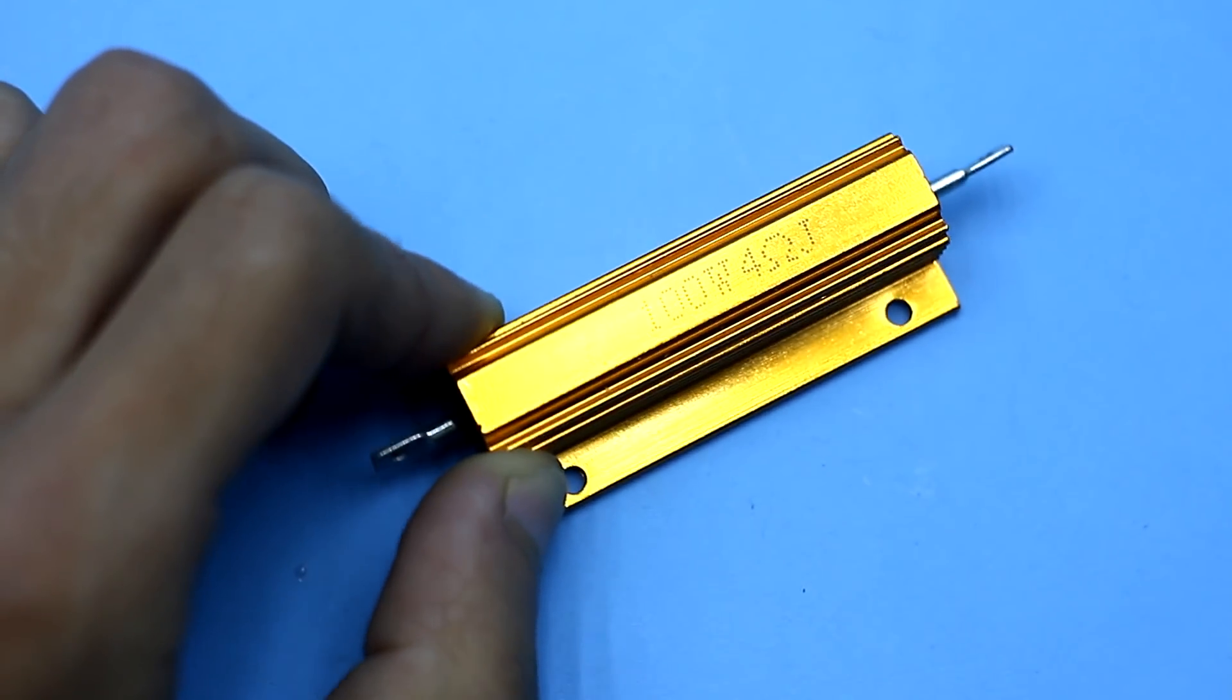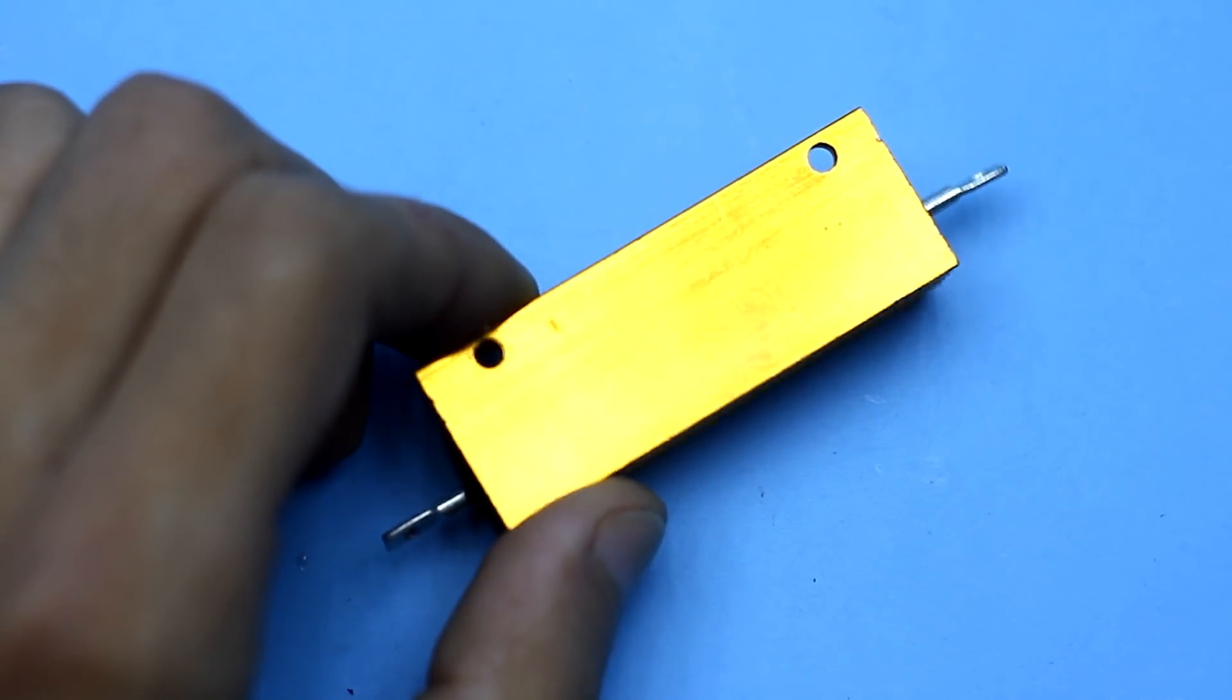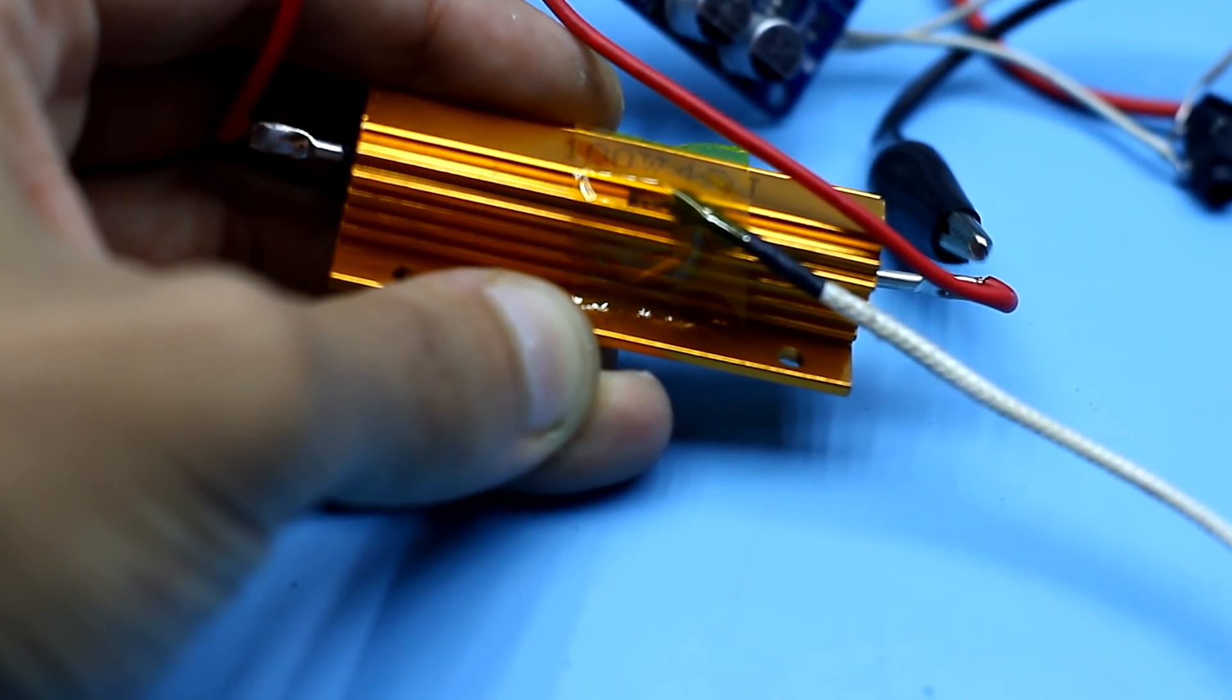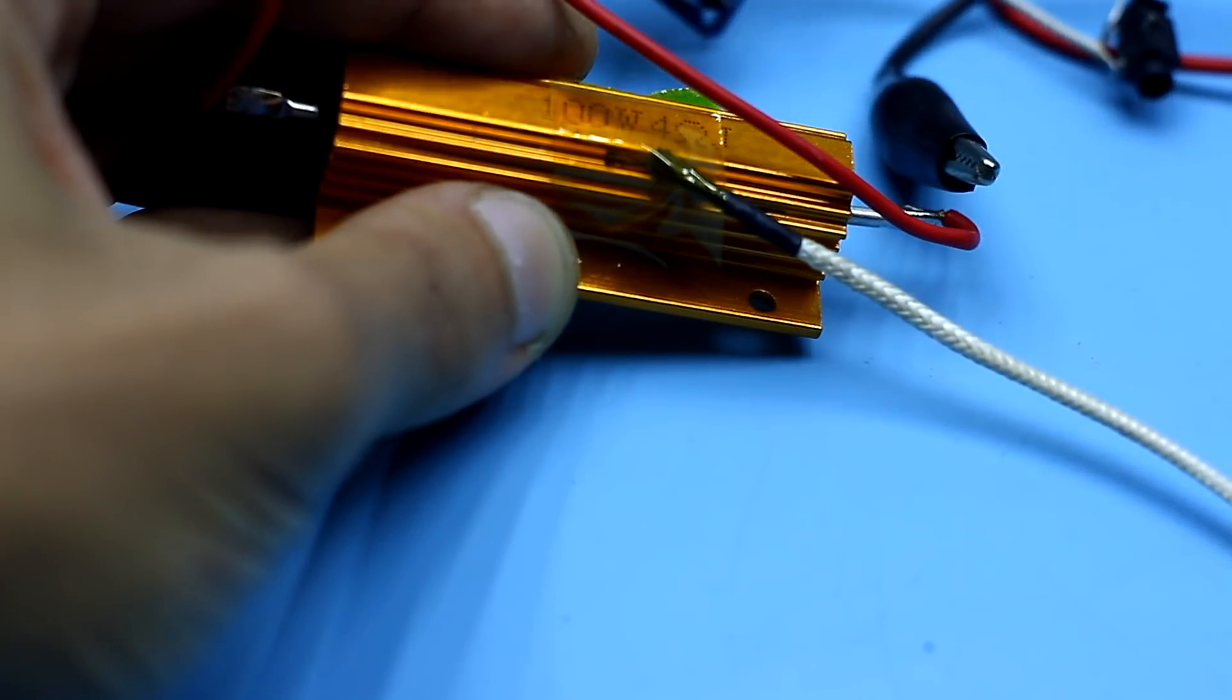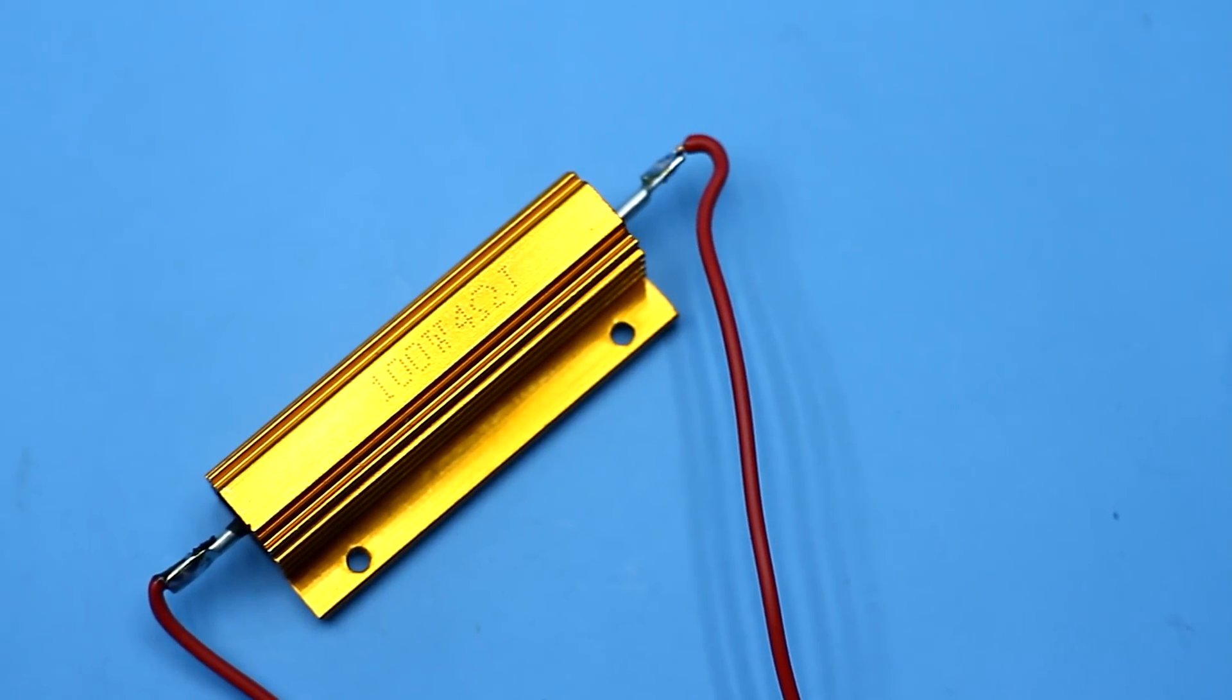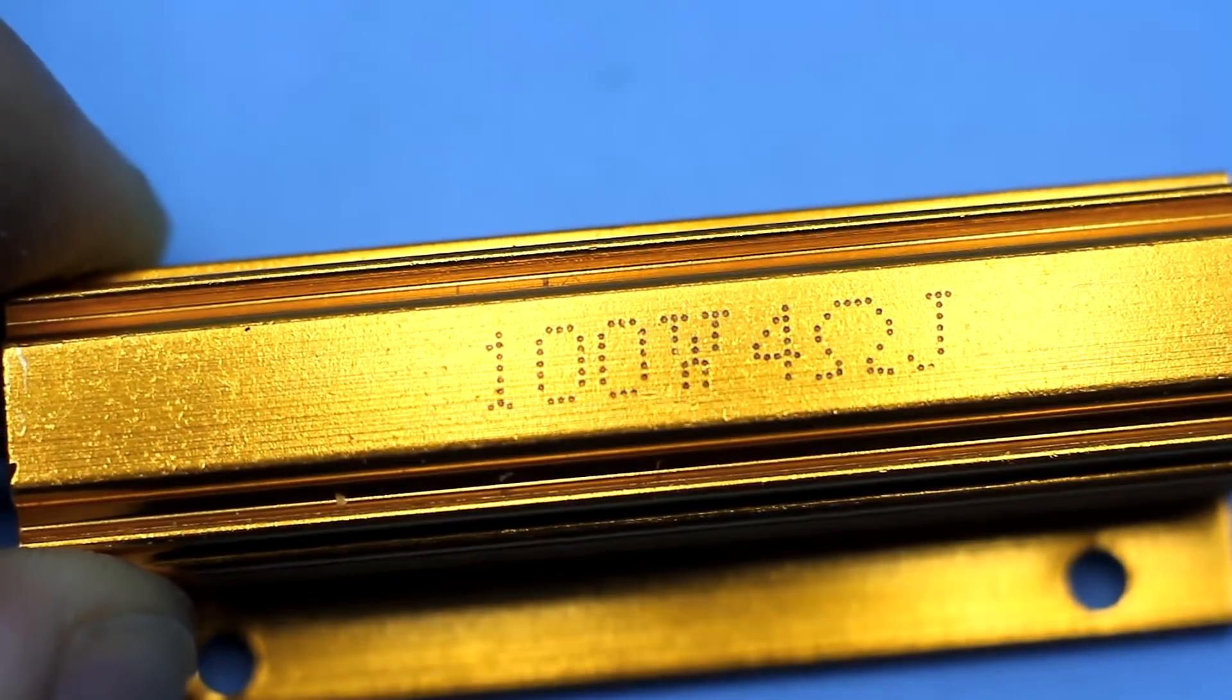I took several such resistors to build a stand for measuring the real output power of audio amplifiers. This load is equivalent to conventional dynamic heads with a resistance of 4 ohms. Such resistors can dissipate declared 100 watts of power, but only for a few seconds.